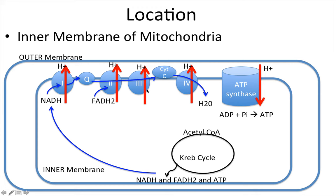The first thing we've got to cover is the location. It's going to happen in the mitochondria, but more specifically you've got to know it's going to be the inner membrane. The mitochondria has two membranes — the outer membrane and the inner membrane — and the electron transport chain happens on the inner membrane. Remember that the Krebs cycle occurs in the matrix or cytosol of the mitochondria.